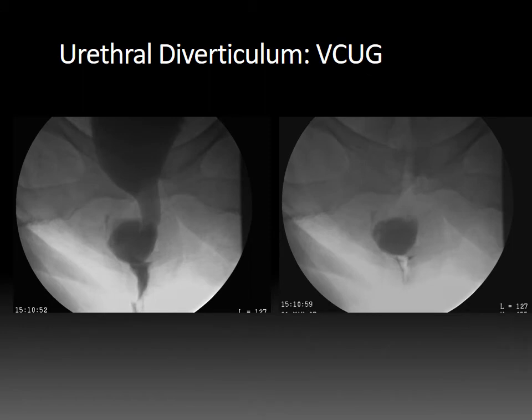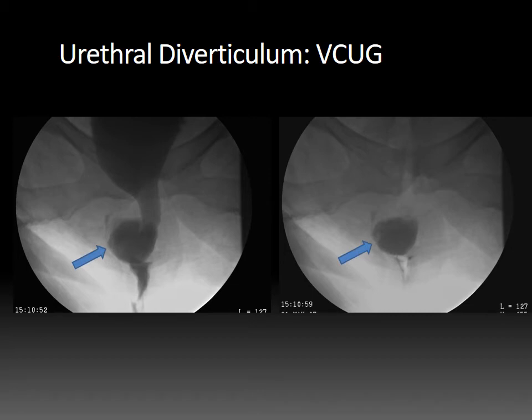VCUG, or voiding cystourethrography, is also an excellent tool to detect urethral diverticula. The initial image shows the bladder connecting to the urethra with a dilated collection. After voiding, there is still pooling of contrast within the urethral diverticulum, demonstrating increased stasis leading to infection. If a diverticulum is not detected or fully characterized on VCUG, MRI would be the next best modality.